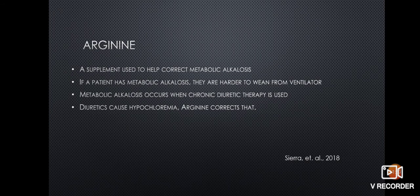Arginine is a supplement used to help correct metabolic alkalosis. If a patient has metabolic alkalosis, they are harder to wean from a ventilator. Metabolic alkalosis occurs when chronic diuretic therapy is used — the diuretics cause hypochloremia, and arginine helps to correct that.